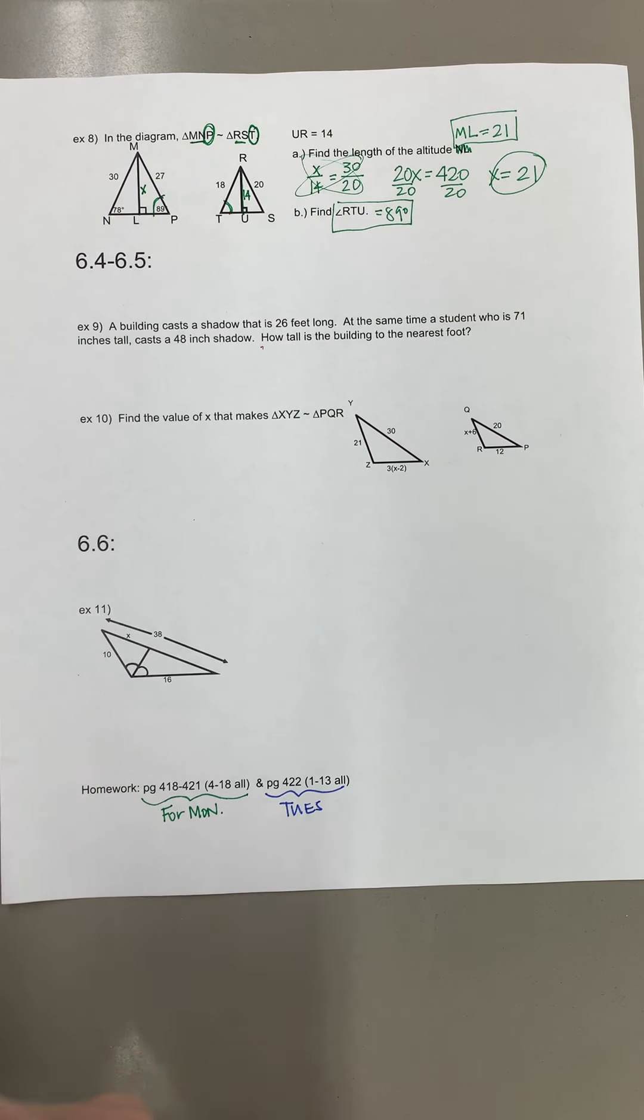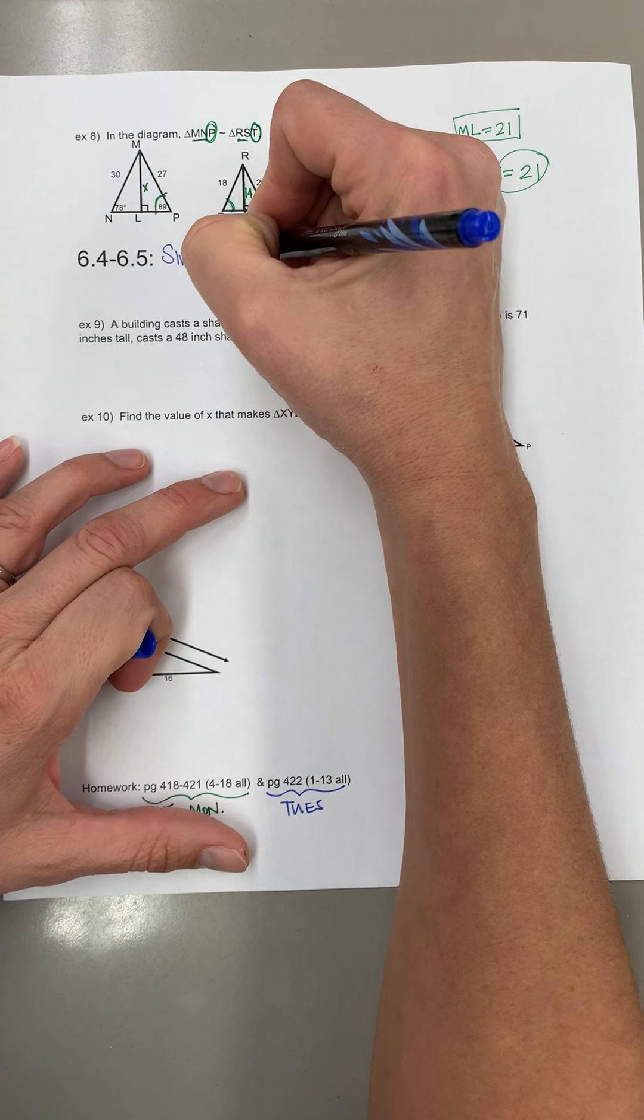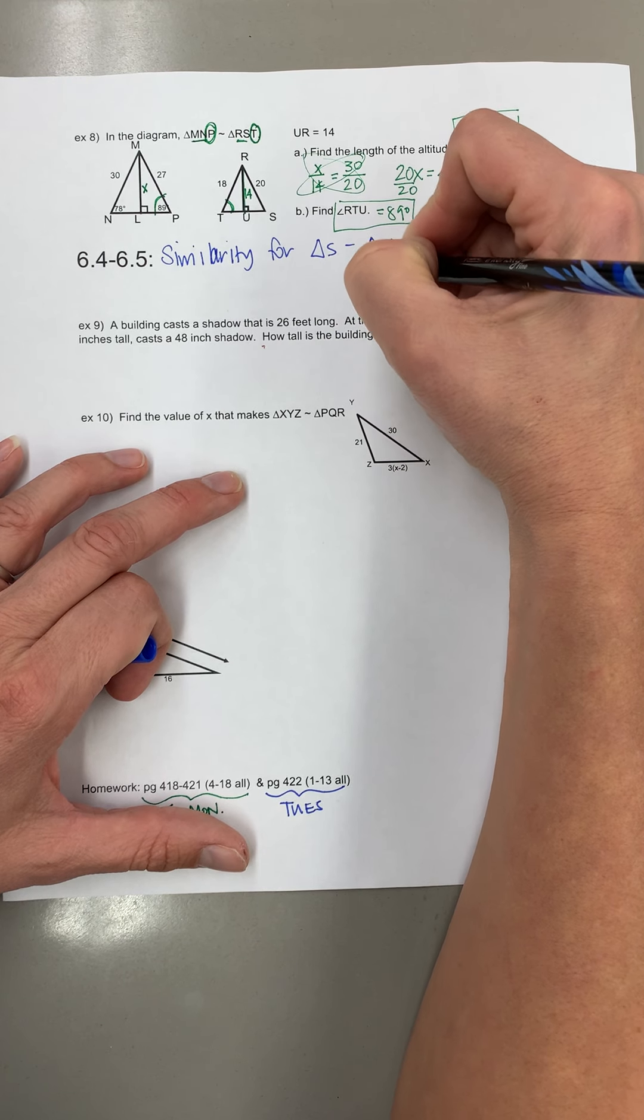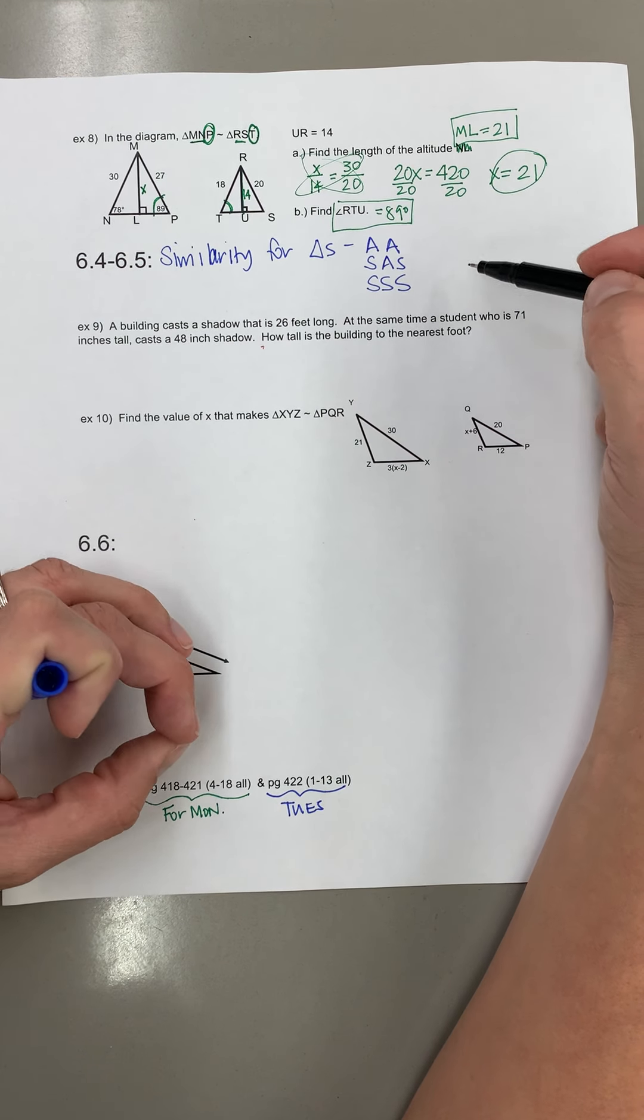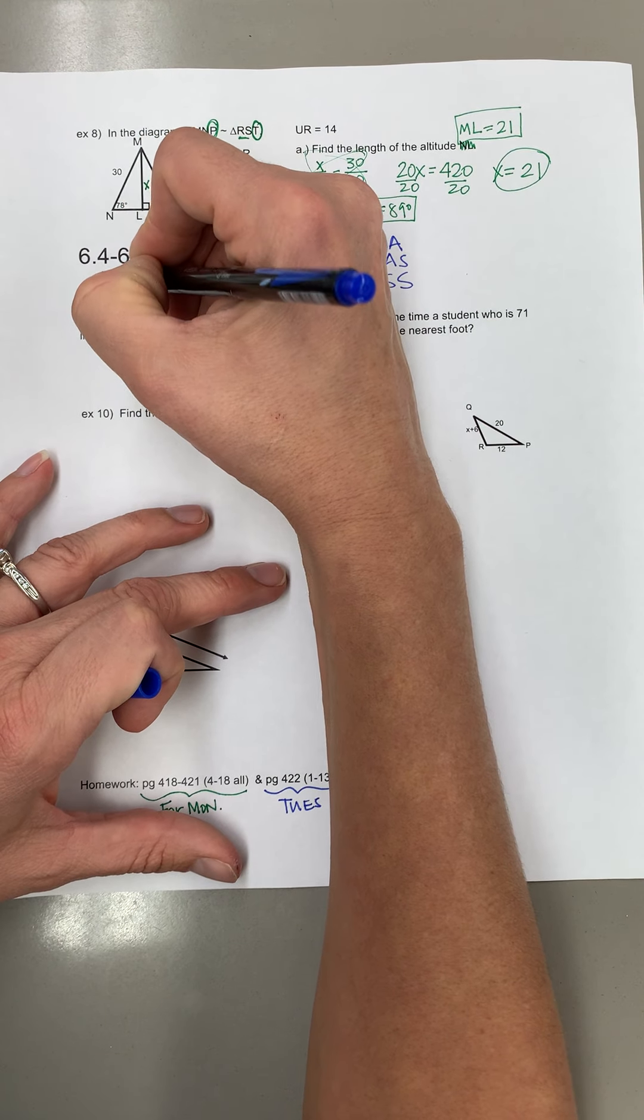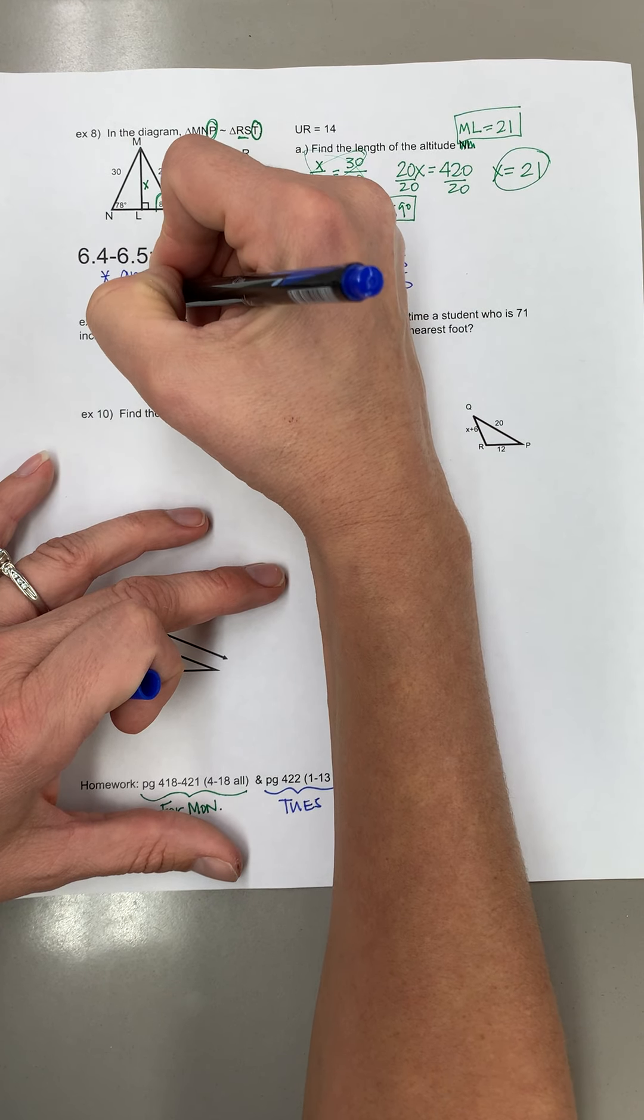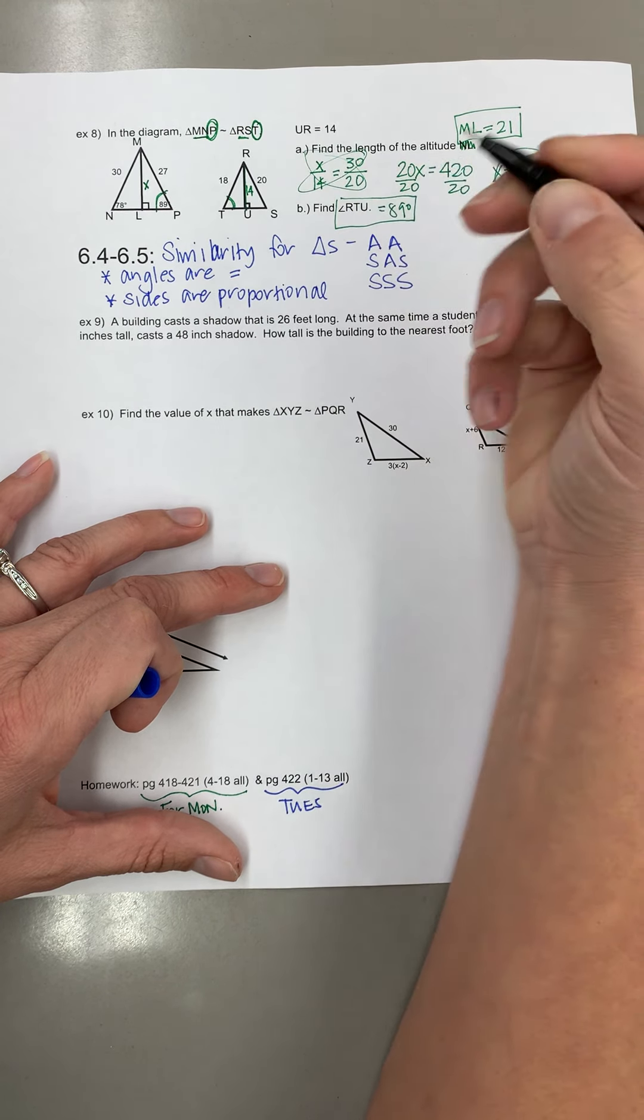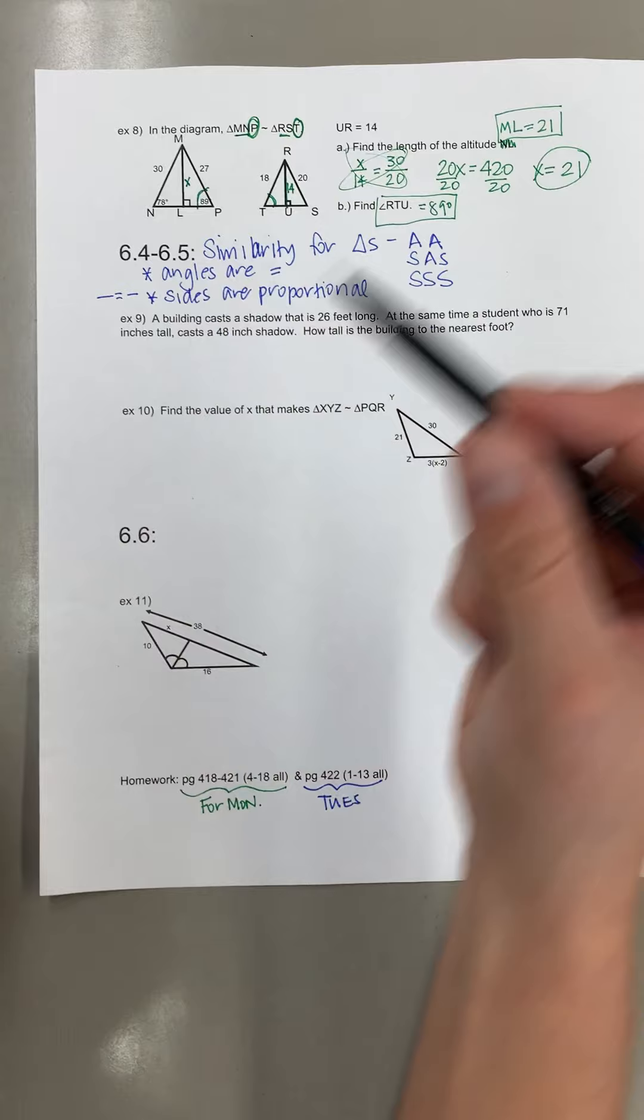So then in section 6.5 we talked about similarity for triangles and how to prove triangles are similar. And the way we learned was angle angle, side angle side, or side side side. And remember these aren't the same as the congruence ones. This just means that the sides all have to be proportional. So the angles must be equal but sides are proportional. And remember proportional means I can set up a ratio. So that's where I have like two equal ratios where I can do cross multiplying.